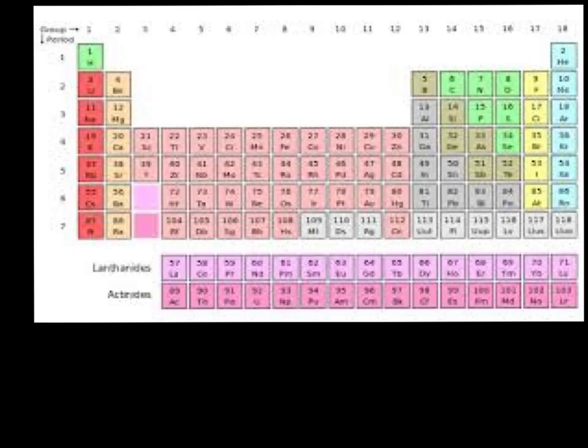So to find valence electrons, again, we use the group number. And for groups 13 through 18, we simply take the one off the front and use the second number. And again, here are the periods, which tells us the number of energy levels in the element.